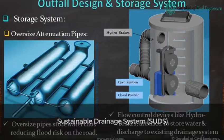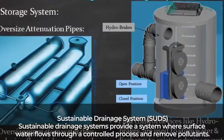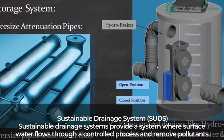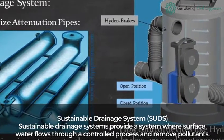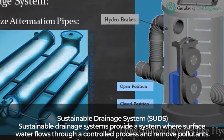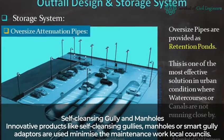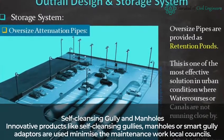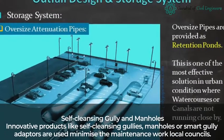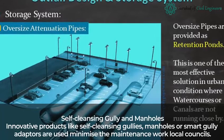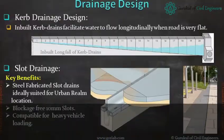Sustainable drainage systems provide a system where surface water flows through a controlled process and removes pollutants. Innovative products like self-cleansing gullies, manholes, or smart gully adapters are used to minimize maintenance work for local councils.